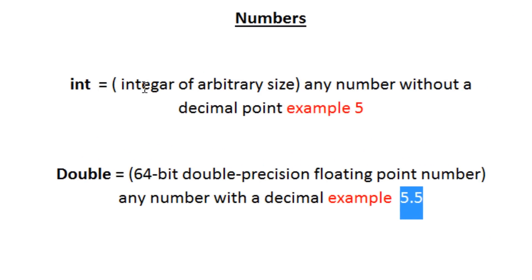There is the int — integers of arbitrary size — which are basically any number without a decimal point. Then we have the double, which are 64-bit double precision floating point numbers, any number with a decimal point.